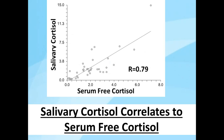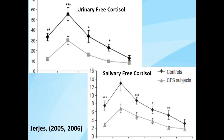Historically, salivary cortisol has been preferred because it correlates reasonably well to serum-free cortisol, and it's a lot easier to test several times throughout the day, which is important because cortisol levels go up in the morning and then down throughout the day. The healthy controls show this pattern, and chronic fatigue patients show the same up-in-the-morning, down-throughout-the-day pattern, but at lower levels. Notably, urine testing produces almost superimposable patterns for both groups, meaning urine testing can adequately determine the free cortisol pattern.